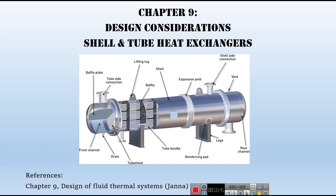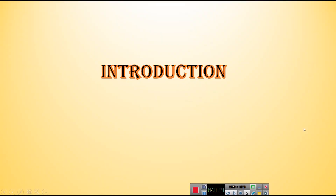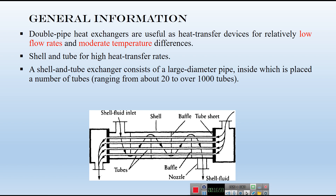Now, Chapter 9 from the Janna textbook: design considerations for shell and tube heat exchangers. When you need a higher surface area — such as for low flow rates or moderate temperature differences — you should switch from a double pipe to a shell and tube heat exchanger. The number of tubes can exceed one thousand. A baffle is used in the shell side to increase mixing and enhance the heat transfer rate.